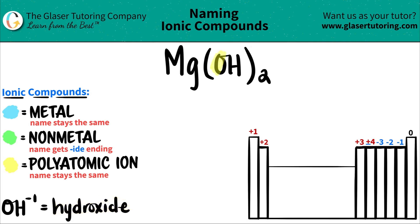And here it is - here's the OH. There's my polyatomic ion. Now the only other element I have to identify is magnesium.